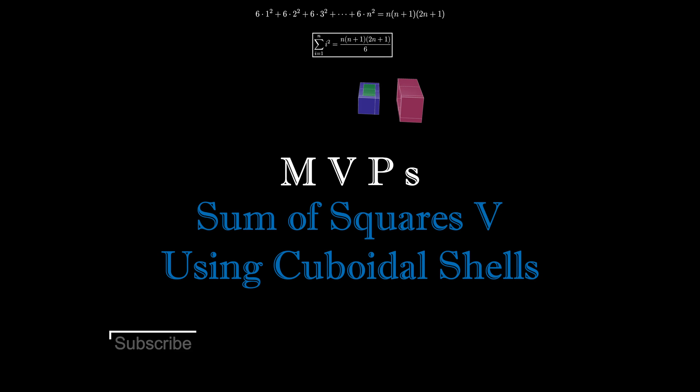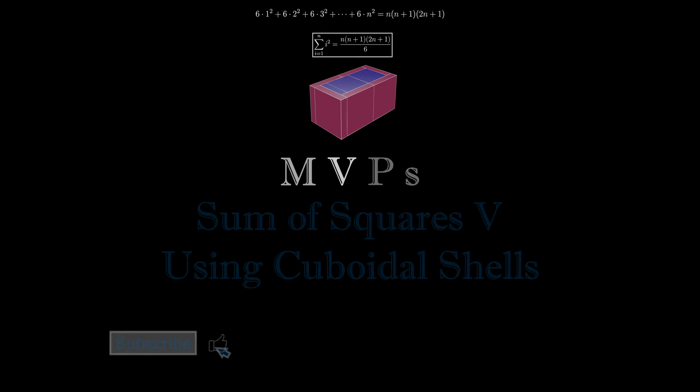Here's an intriguing 3-dimensional way to sum squares. Start with six 1 by 1 by 1 cuboids as shown here. Each of these cuboids contains a volume of 1 squared times 1, so the total volume of these 6 is 6 times 1 squared. We can glue these 6 together to form this cuboid.